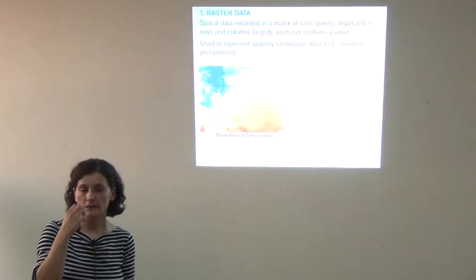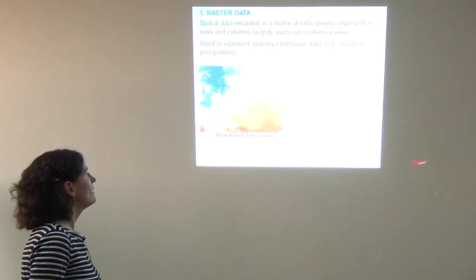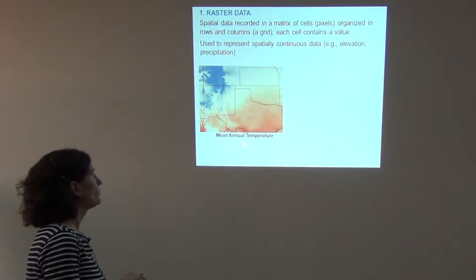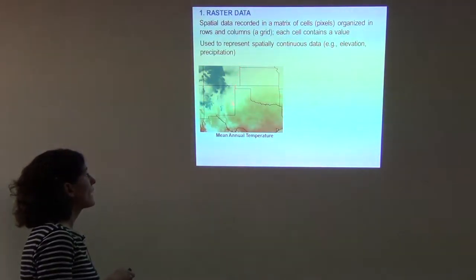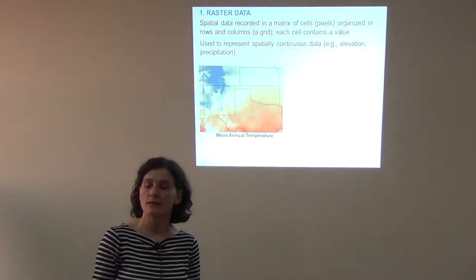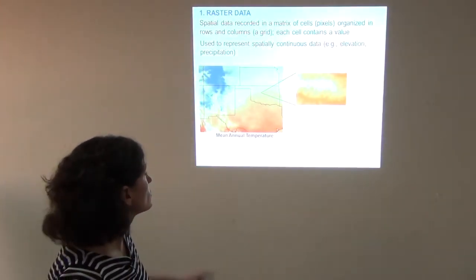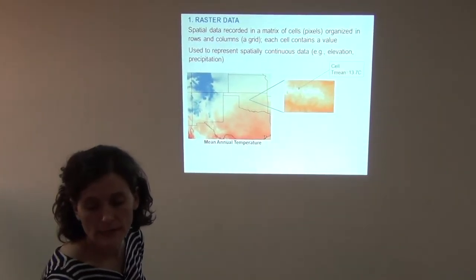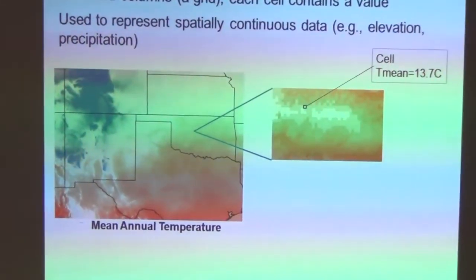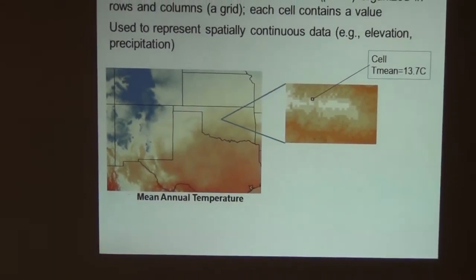Some types of data you'll come across if you work in ArcGIS or any GIS software — one type we see very often is climate data. Here I'm showing an example of mean annual temperature. We have a landscape of pixels or cells with values. Zooming in, we see small cells, and each cell has a temperature value for that pixel, which corresponds with the temperature at that particular location on the landscape.